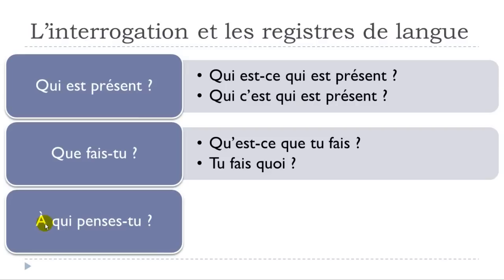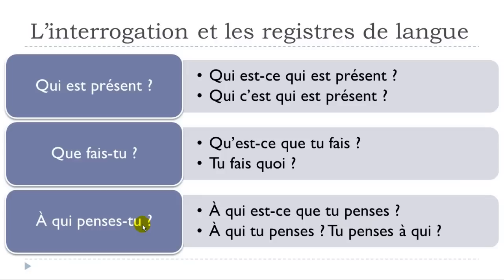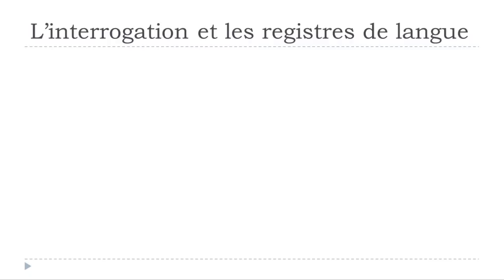À QUI PENSES-TU? — penser à means to think about someone, so the preposition À comes first. The everyday version is À QUI EST-CE QUE TU PENSES? And the informal spoken versions are À QUI TU PENSES? or TU PENSES À QUI? Let's review: QUI EST PRÉSENT? — QUI EST-CE QUI EST PRÉSENT? — QUE FAIS-TU? — QU'EST-CE QUE TU FAIS? — TU FAIS QUOI? — À QUI PENSES-TU? — À QUI EST-CE QUE TU PENSES? — À QUI TU PENSES? / TU PENSES À QUI?